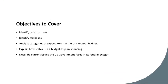Tax structures form the backbone of government revenue generation, dictating how taxes are levied on individuals and businesses. These structures vary widely across countries and can have significant implications for economic equity and efficiency. In the U.S., tax structures include progressive taxes, where the tax rate increases as income rises; regressive taxes, which take a larger percentage of income from lower-income individuals; and proportional taxes, where everyone pays the same percentage of their income in taxes.